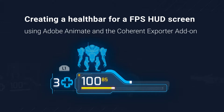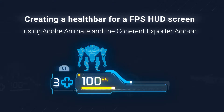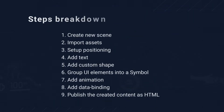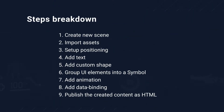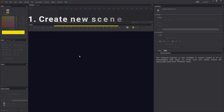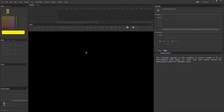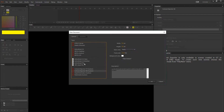In this tutorial we're going to create a held bar using Coherent Exporter for Adobe Animate. To create a new file press Ctrl N, then select Coherent GT or Hummingbird.